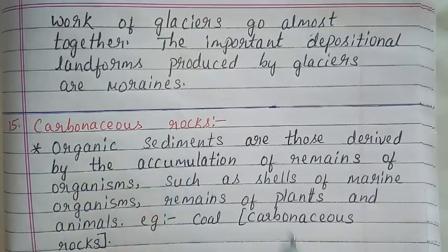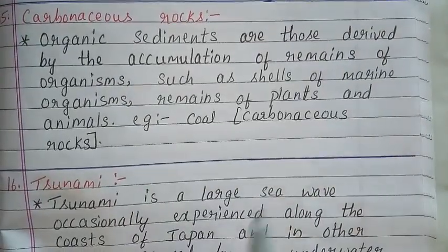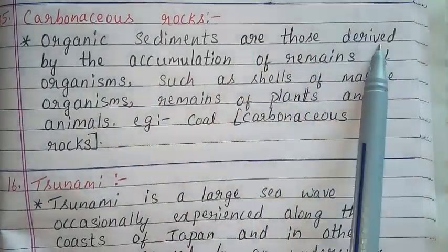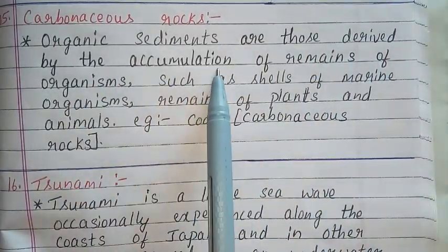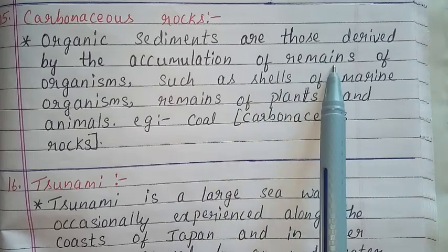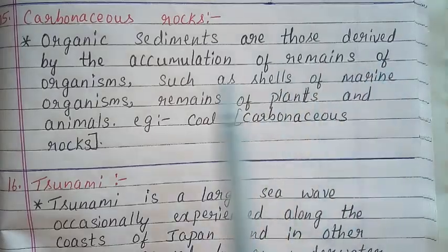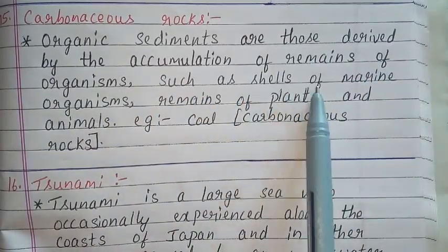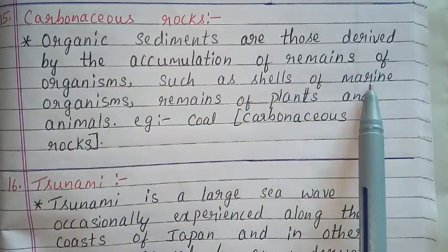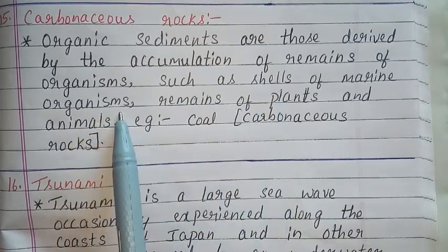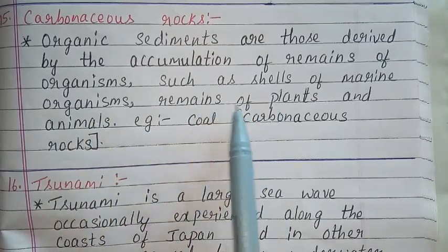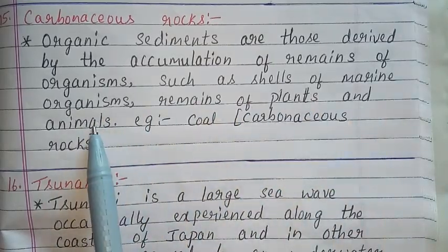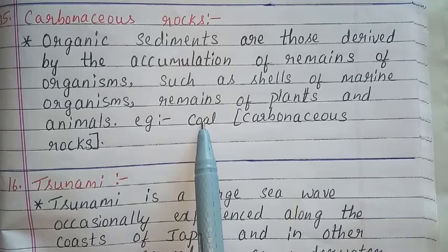Question 15: Carbonaceous rocks. Answer: Organic sediments are those derived by the accumulation of remains of organisms such as shells of marine organisms, remains of plants and animals. Example: Coal. These are called Carbonaceous rocks.